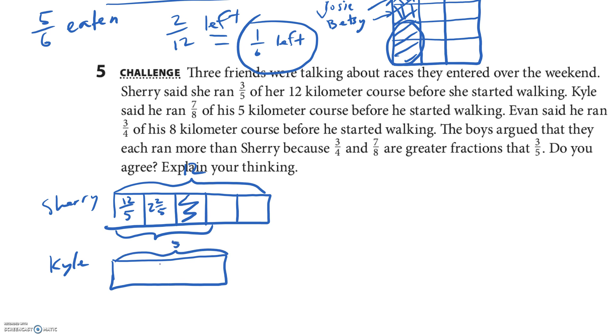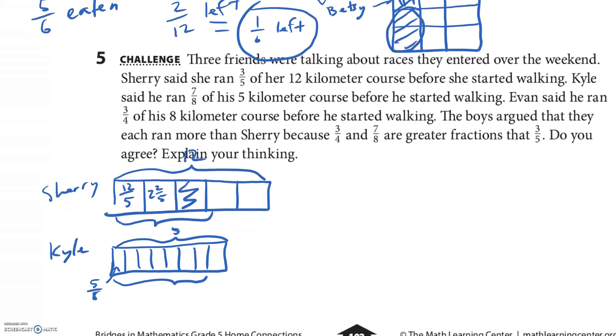All right, and then it looks like Kyle ran 7/8 of 5. So Kyle has 5 right here, and he ran—I'm gonna do this four—7/8 of it. He ran almost the whole thing. So we need to know each of these little ones is 5/8. So 5 divided by 8 is 5/8.